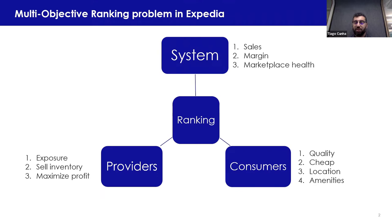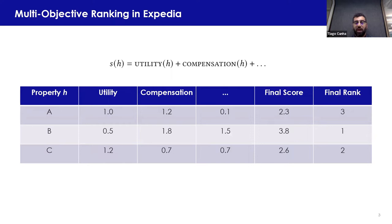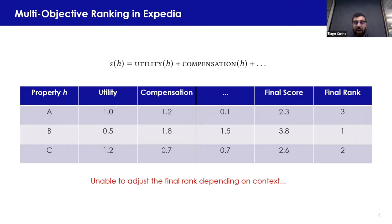All of this goes into the ranking. We do it by summing over multiple components, where each component is designed to cater to a few of these objectives, and in the end summed in a posteriori fashion. For example, we sum the utility and compensation: utility refers to how good a property is for the customer, and compensation is linked to the margin received from each property. We sum all scores including some hidden ones to create the final score and rank accordingly.